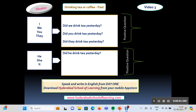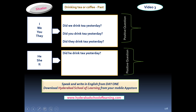Let's understand how to make questions on a situation called drinking tea. It's a past activity. Did I drink tea yesterday? Did we drink tea yesterday? Did you drink tea yesterday? Did they drink tea yesterday? Did he drink tea yesterday? Did she drink yesterday?